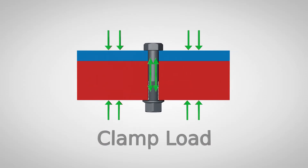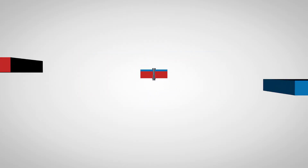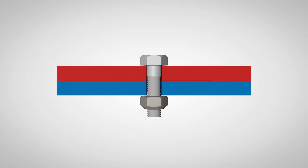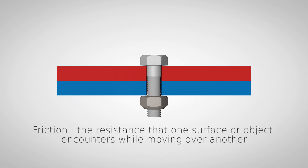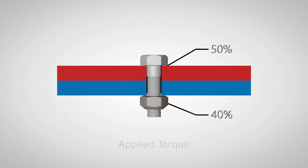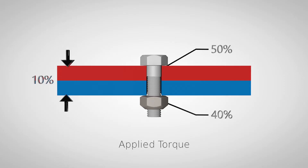As discussed in Part 1, the goal of tightening is to create clamp load. Clamp load is the force keeping two or more parts from separating from each other. There is one giant factor that prevents all the torque we apply from being translated into clamp force, and that is friction. Friction is the resistance that one surface or object encounters while moving over another. About 90% of the applied torque is spent overcoming friction, split between the threads and bearing surfaces of the bolted joint. Only about 10% of the applied torque in a joint is creating clamp load.